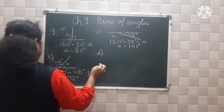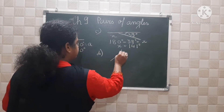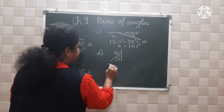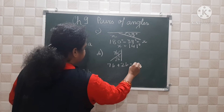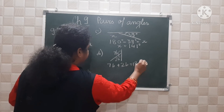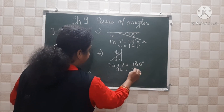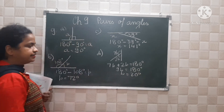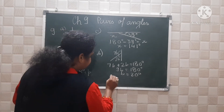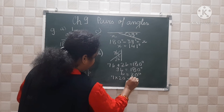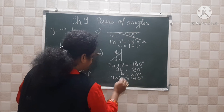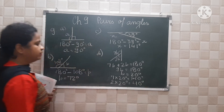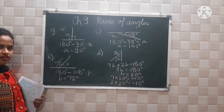For part D, the angles are 7B and 2B on a straight line. So 7B plus 2B equals 180 degrees. Therefore 9B equals 180 degrees and B equals 20 degrees. One angle is 7 times 20, which is 140 degrees, and the other is 2 times 20, which is 40 degrees.